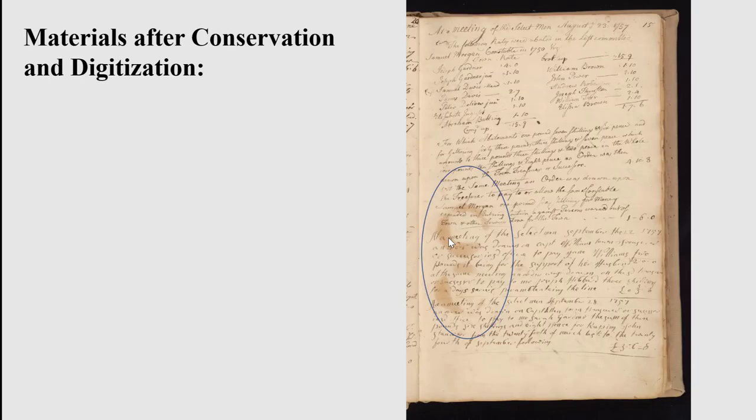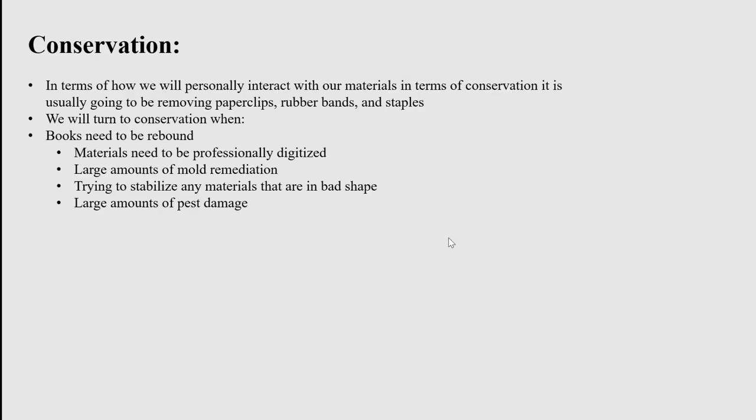They still kept the staining because it was over the ink. When it comes to conservation, conservationists will do what they can for materials without the risk of causing more damage. For example, if they tried to remove some of the stains you see, they could also potentially remove ink, which would cause researchers to lose information and change how the researcher would interpret the record in question. So what does conservation mean to you when you are interacting with your materials? For everyone here, it is going to involve removing metal paper clips, removing metal staples, and removing rubber bands when they come off easily and gently.